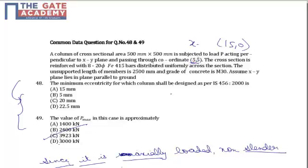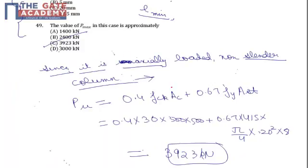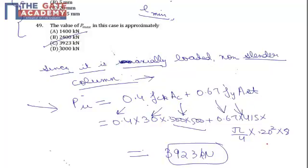This is a little more confusing in terms of how to deal with the question, but since it satisfies all the criteria of an axially loaded column, we are designing it for e minimum. It is a non-slender member, so we can assume this column to be axially loaded, for which P ultimate is given by 0.4 FCK into area of concrete plus 0.67 Fy AST, which comes out as 0.4 FCK into area of concrete — that is 500 into 500 — plus 0.67 into 415, with area of steel being 20 bars, 8 in number, so pi by 4 into 20 squared into 8.